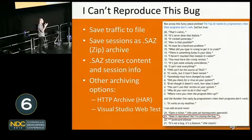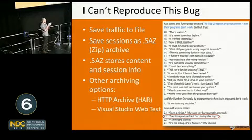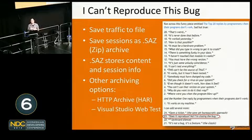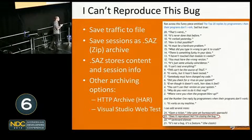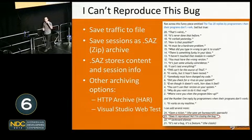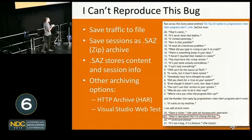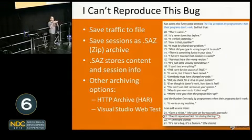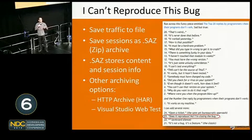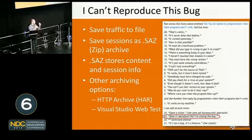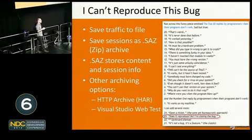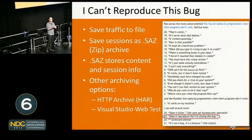Fiddler has a proprietary file type called SAZ — a zipped file containing all the information. But Fiddler also lets you save content into an HTTP archive file, which is a standard format supported by Chrome, IE, and Firefox. And since Fiddler was written by someone from Microsoft, it can generate from the sessions a web test class you can plug into Visual Studio to stress test your application. You can browse your application, save all sessions as a web test project, and run a stress test.